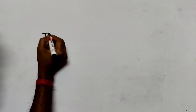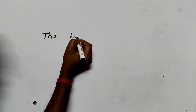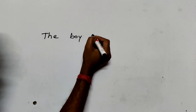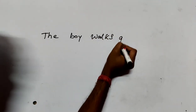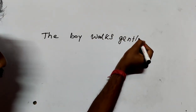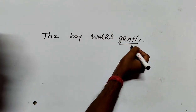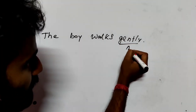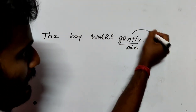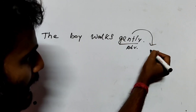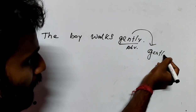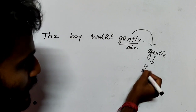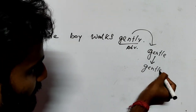For example, the boy works gently. Here, the adjective form is 'gentle' and the noun form is 'gentleness.'